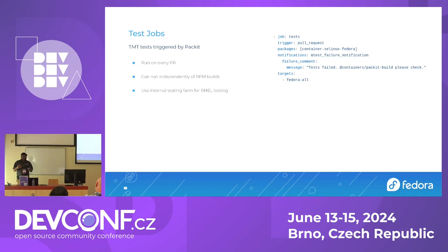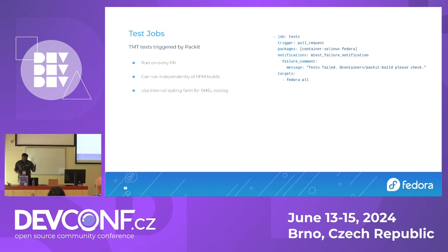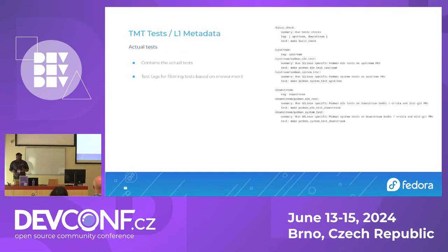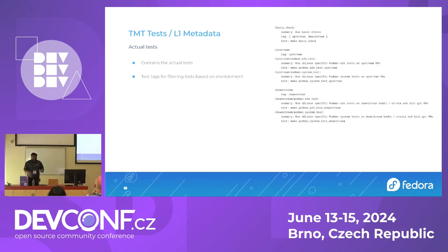Packit is also helpful for running test cases. You specify the test job and trigger, then specify what targets to run tests against, and it will run on every PR. TMT divides things into two parts: L1 metadata and L2 metadata. L1 metadata specifies what to run — you add your test cases and provide tags. Some test cases run on upstream PRs and some on downstream pull requests, and you differentiate that by providing tags.